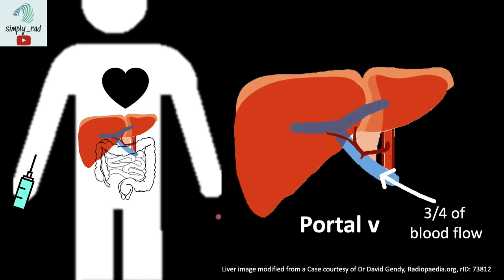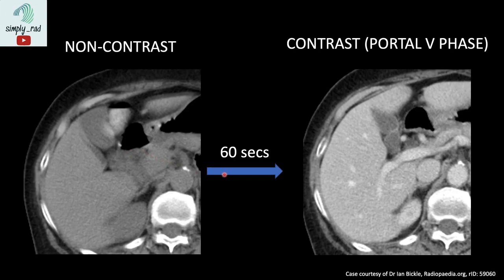Let's trace how the contrast gets into the portal vein. Starting with the injection of contrast into a peripheral vein in the arm, it travels to the heart, from the heart to the lungs, from the lungs back to the heart, and from the heart to the aorta. Blood then goes to the gastrointestinal system, then to the portal vein, and then the liver. So the contrast went to many places before it reached the main portal vein.